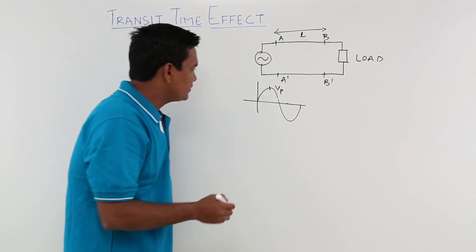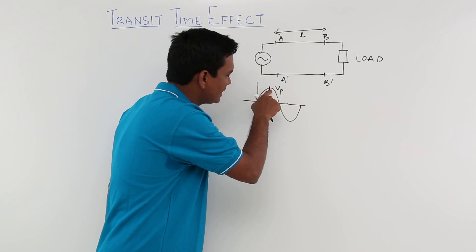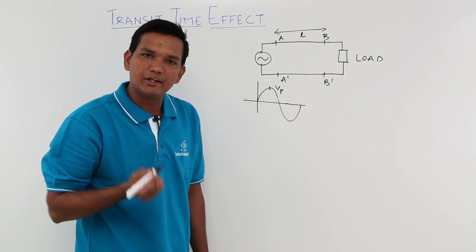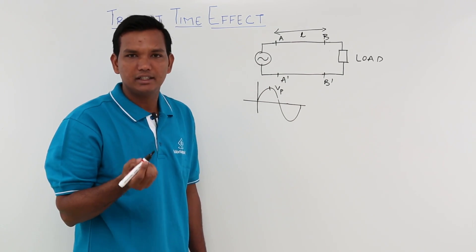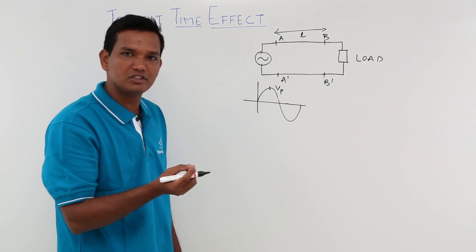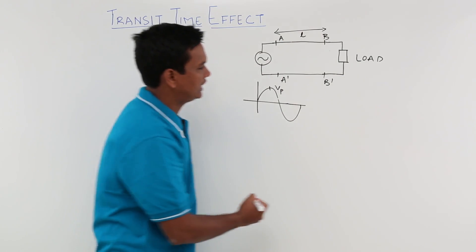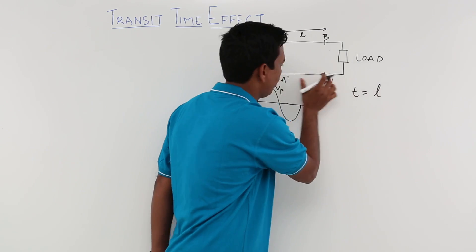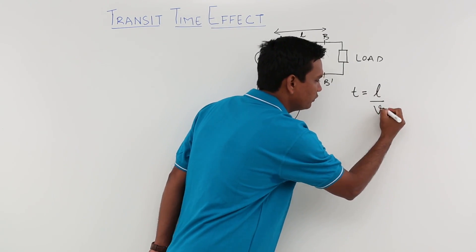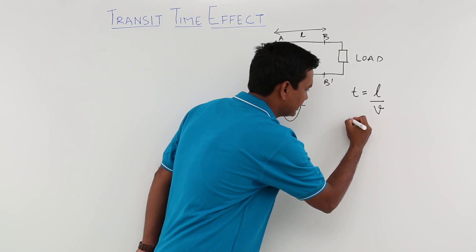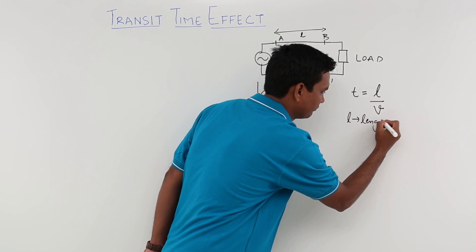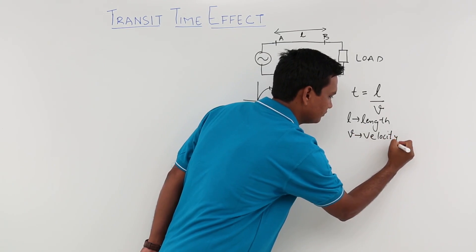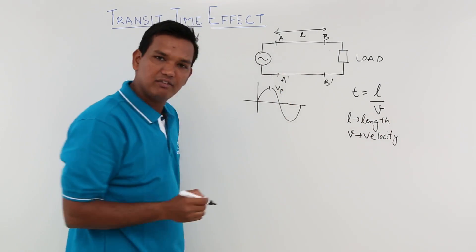As we know, transmitting a signal to another point needs some time, because no signal can travel with infinite speed. It needs to travel with some velocity, and in order to cover a length it needs some time. So the time would be given by: time equals the length of the wire divided by the velocity with which it is traveling. So L is my length and V is the velocity with which the voltage is traveling.